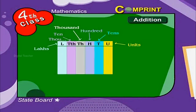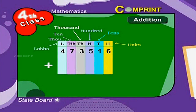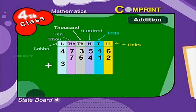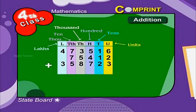Let us arrange the sum of the numbers here: 4,73,516 plus 75,412 plus 3,58,723 plus 85,260. Now let us see how to add all these numbers.